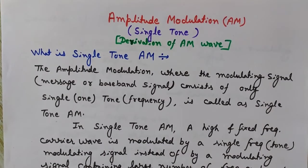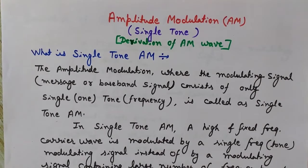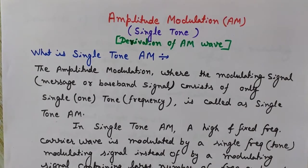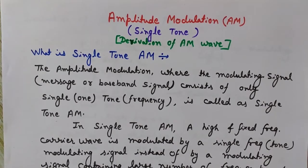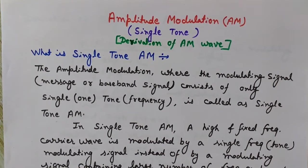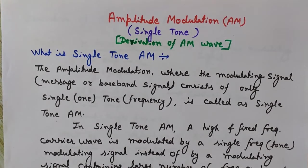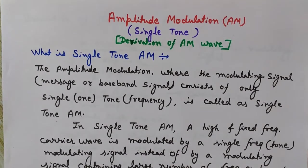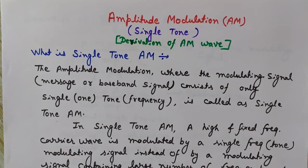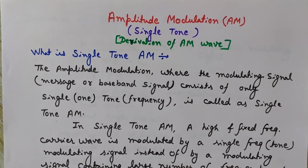Hi, this is Lalit Vasist and you are watching Engineering Made Easy. In this video lecture we will discuss amplitude modulation. Here we will derive the amplitude modulated wave equation for single tone. By single tone we mean a single frequency — when the modulating signal has only one frequency or one tone it is known as single-tone AM.